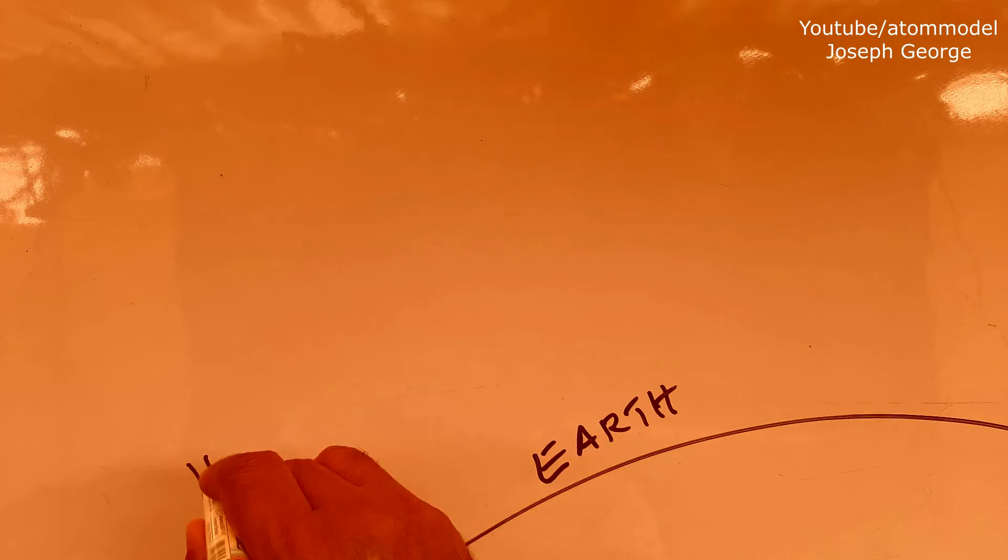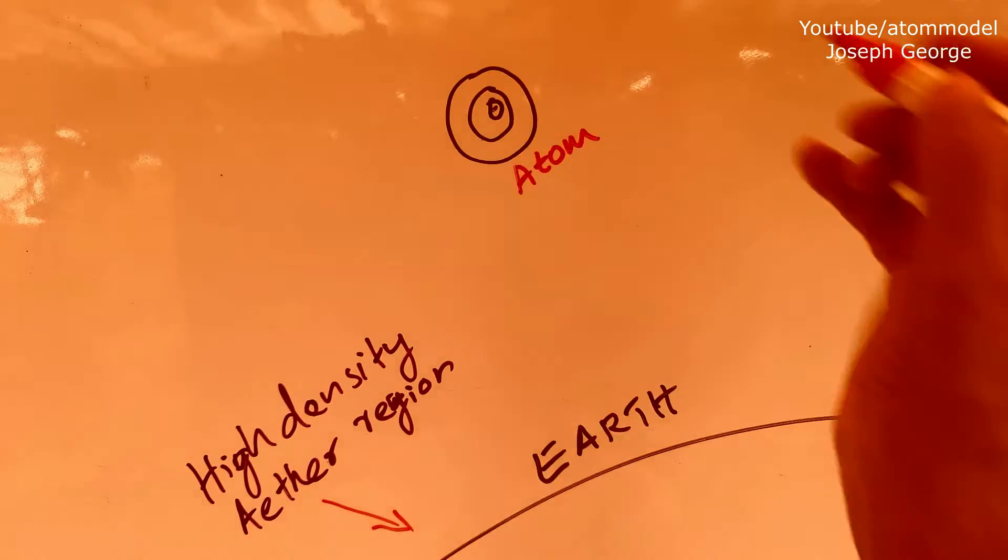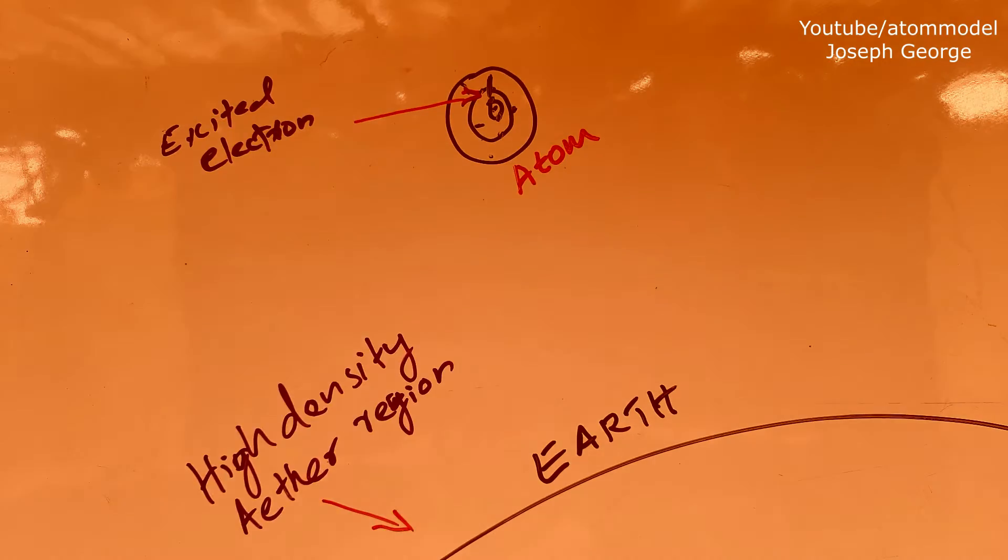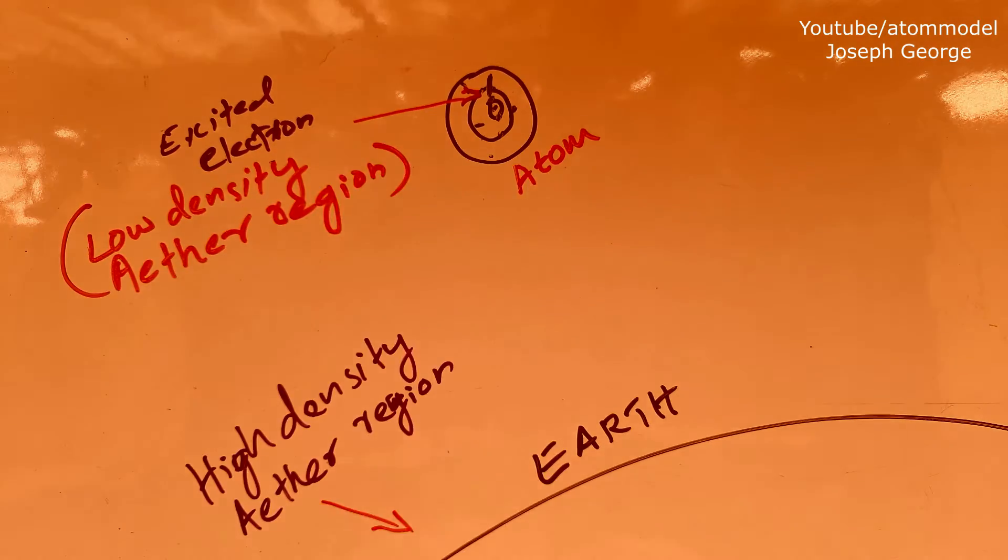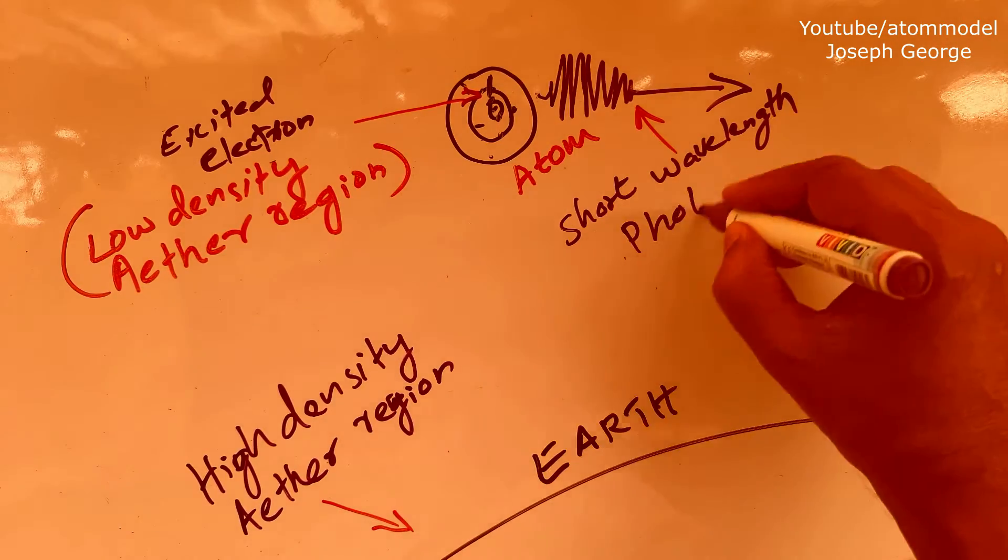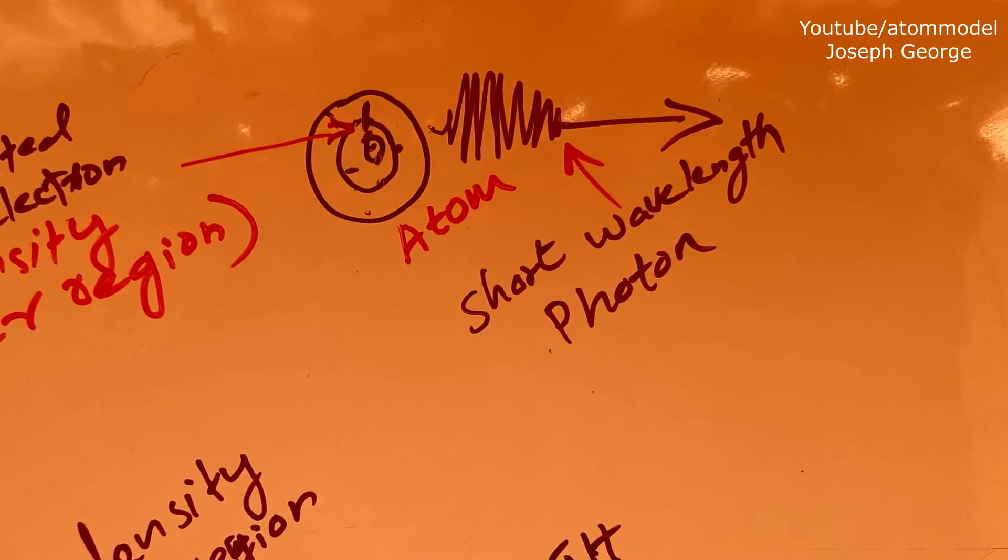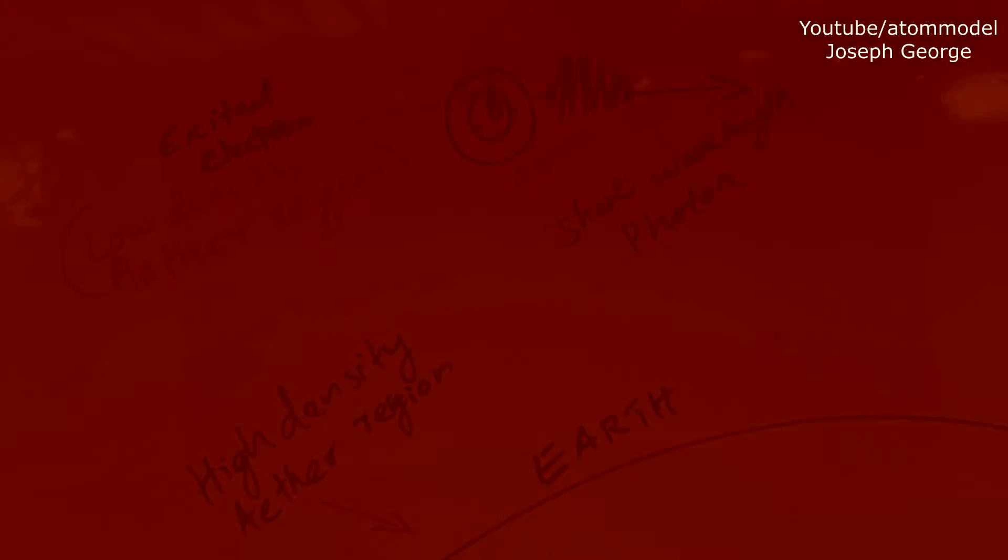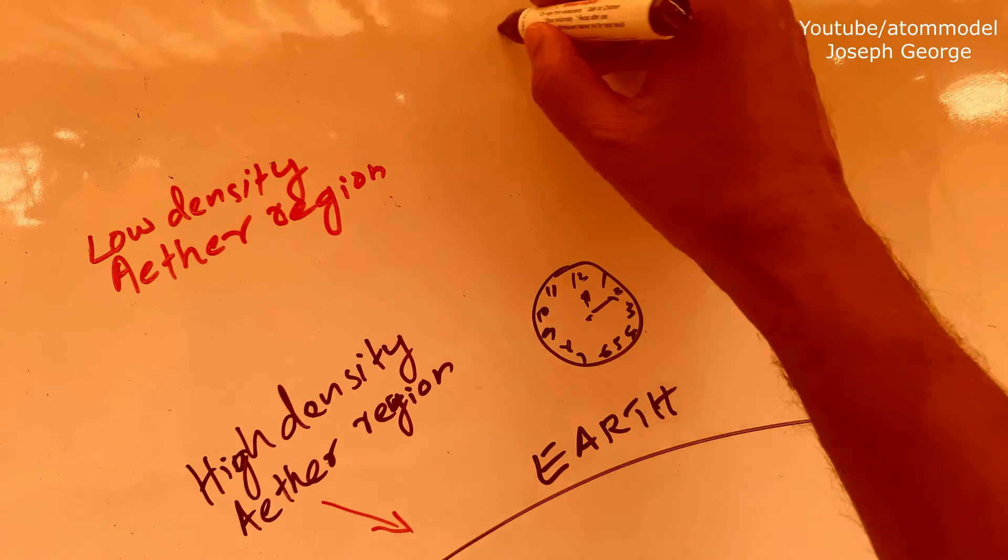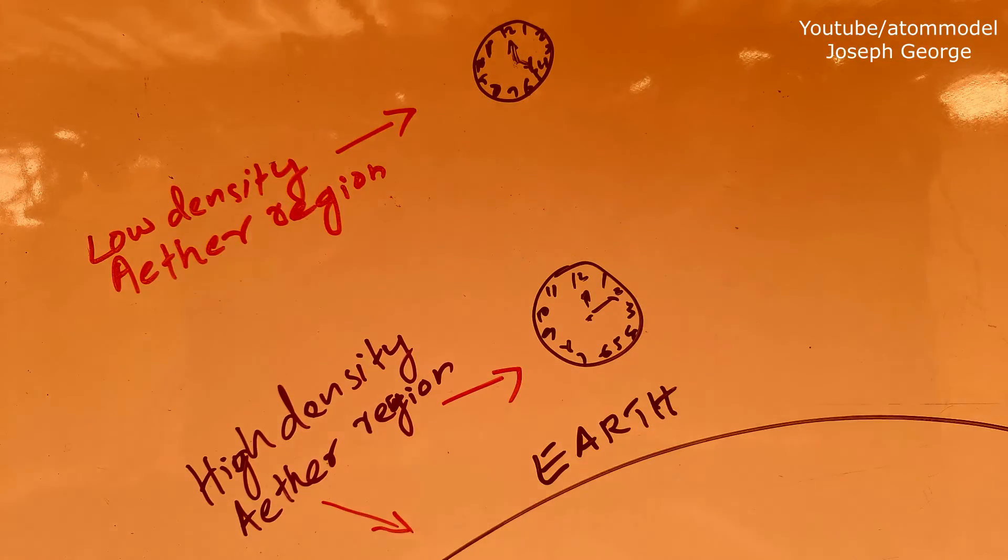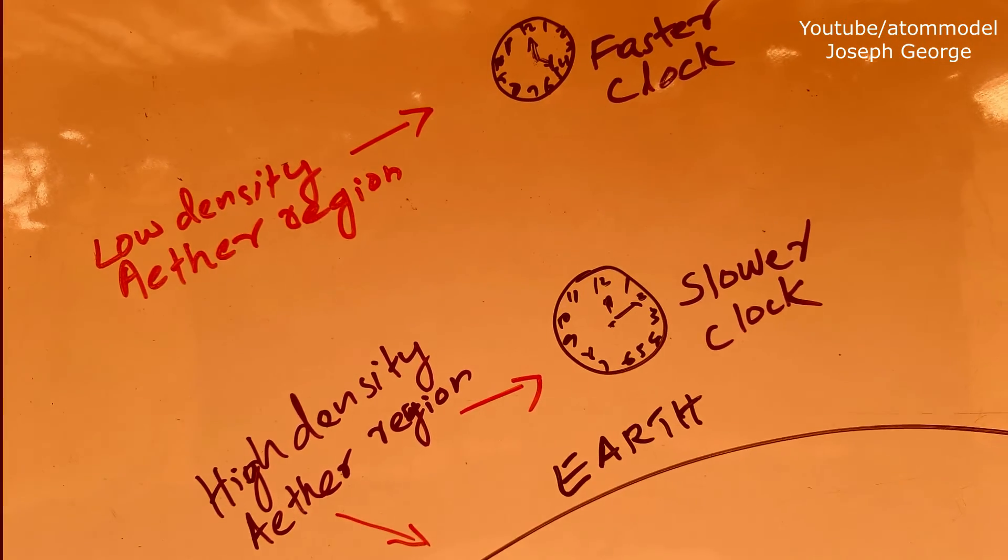Conversely, if an atom is situated in a low ether density region, because of the lower friction by ether, its electrons will emit shorter wavelength photons. This can explain why time ticks at a slower rate near Earth than in space and explain gravitational time dilation.